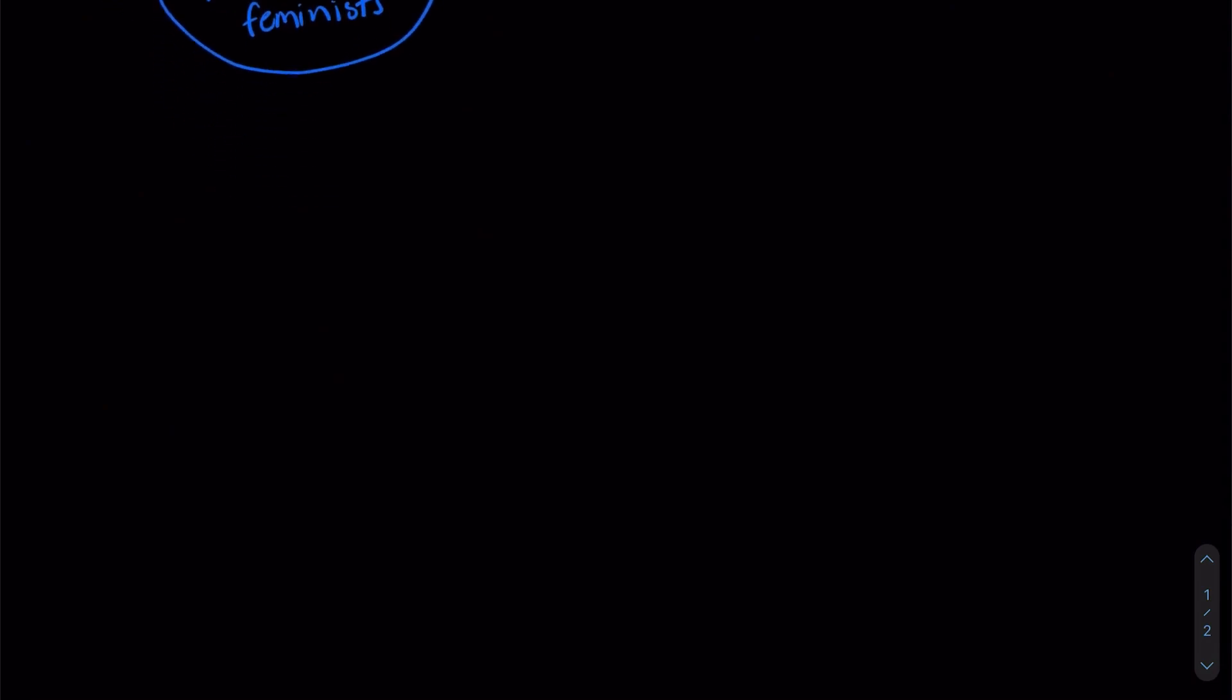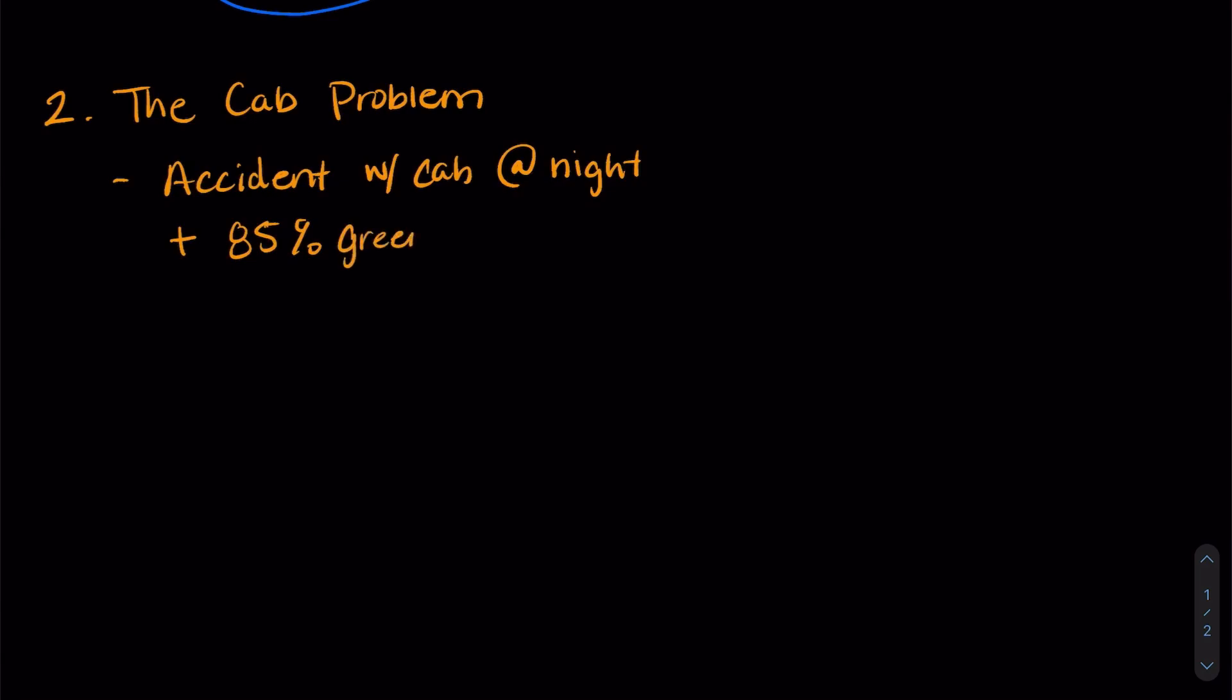All right, moving on. The second problem that we're going to talk about is called the cab problem, and this is a type of problem called a base rate fallacy. So there is an accident with a cab at night in a city, and in this city there are 85% green cabs and 15% blue cabs. Now a witness can recognize the cab color about 80% of the time.